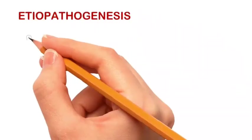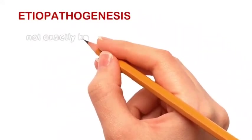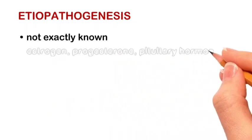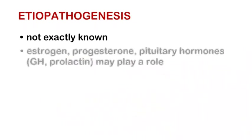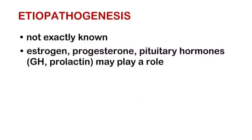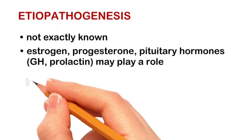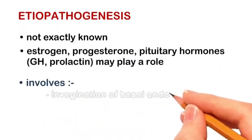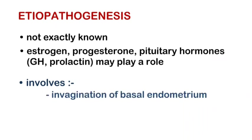The etiopathogenesis is not exactly known, but estrogen, progesterone, and pituitary hormones like GH and prolactin are found to play a role. It involves the invagination of the basal endometrium.